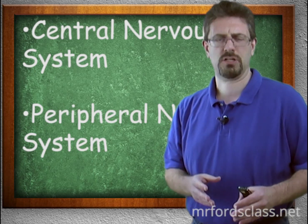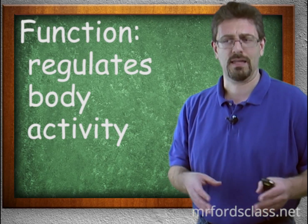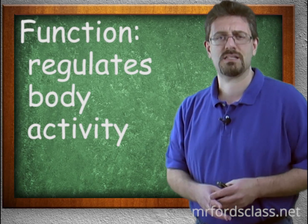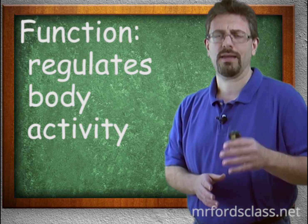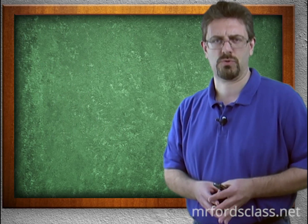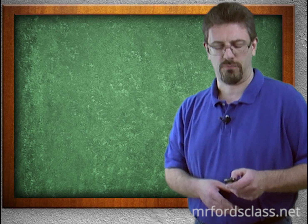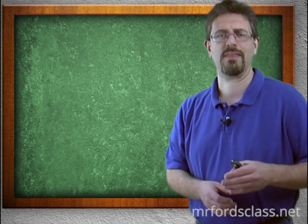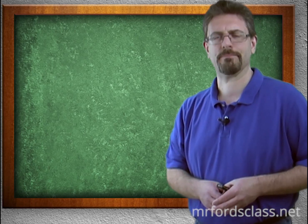The function of the nervous system is to regulate the body. It's your thinking, it's your brain, it controls your body activities. Now, little heads up — when we talk about the endocrine system, the endocrine system also controls the body, but it does it through different means. So the nervous system is composed of the brain, the spinal cord, and the nerves to the rest of the body, and its job is to regulate the body.